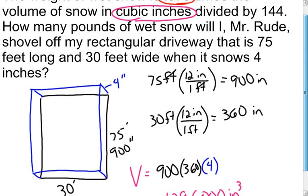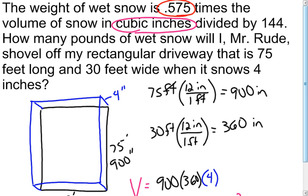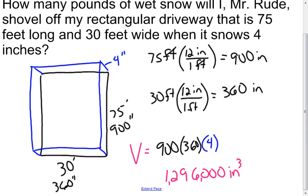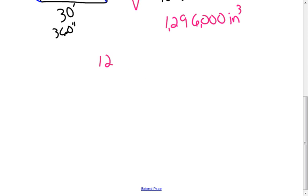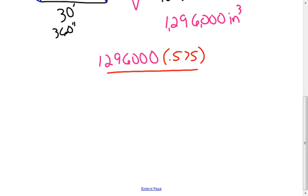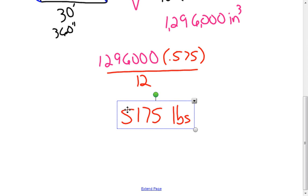Now that I know the volume, I can use the weight formula. It told me to take that number, multiply it by 0.575, and then divide it by 144 to get the weight in pounds. So I take my 1,296,000 cubic inches, multiply it by 0.575, and divide by 144. The total weight comes out to 5,175 pounds sitting on my driveway — so I must be a pretty strong person to shovel it all off at once.